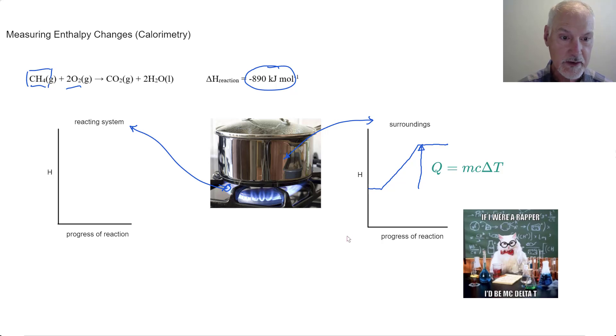And this is found in our IB data booklet. In our particular case, although the surroundings constitute the air, the metal of the pot, and the water, we're going to focus on water, since it makes up the bulk of the surroundings in this case. So, in this particular equation, M would refer to the mass of water in the pot.